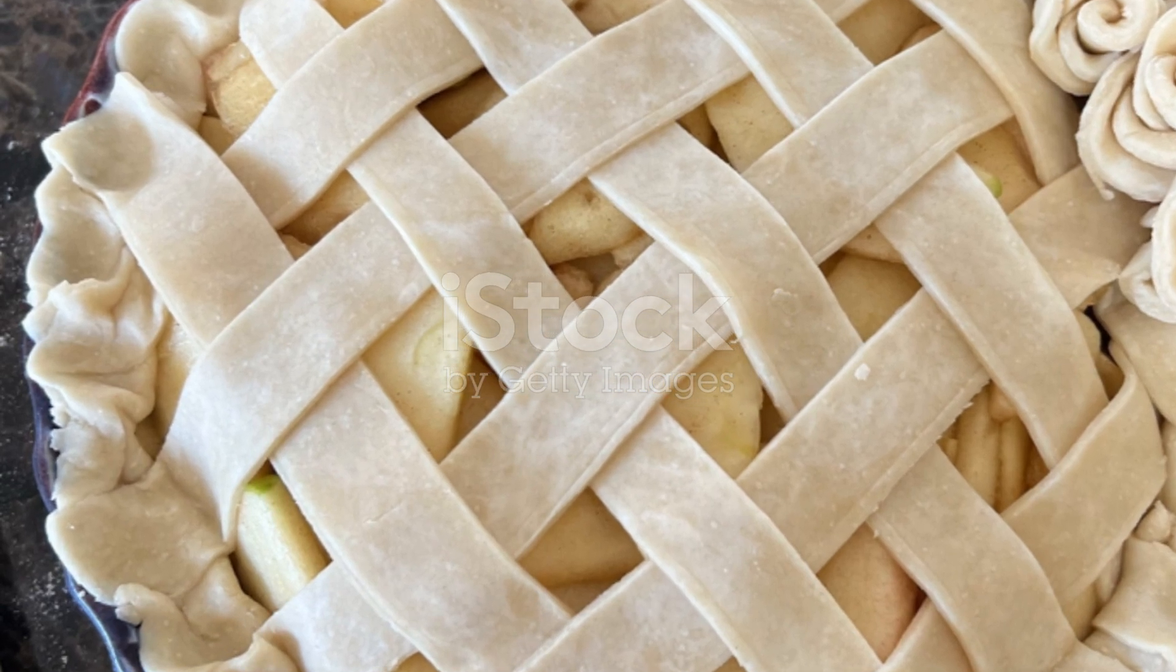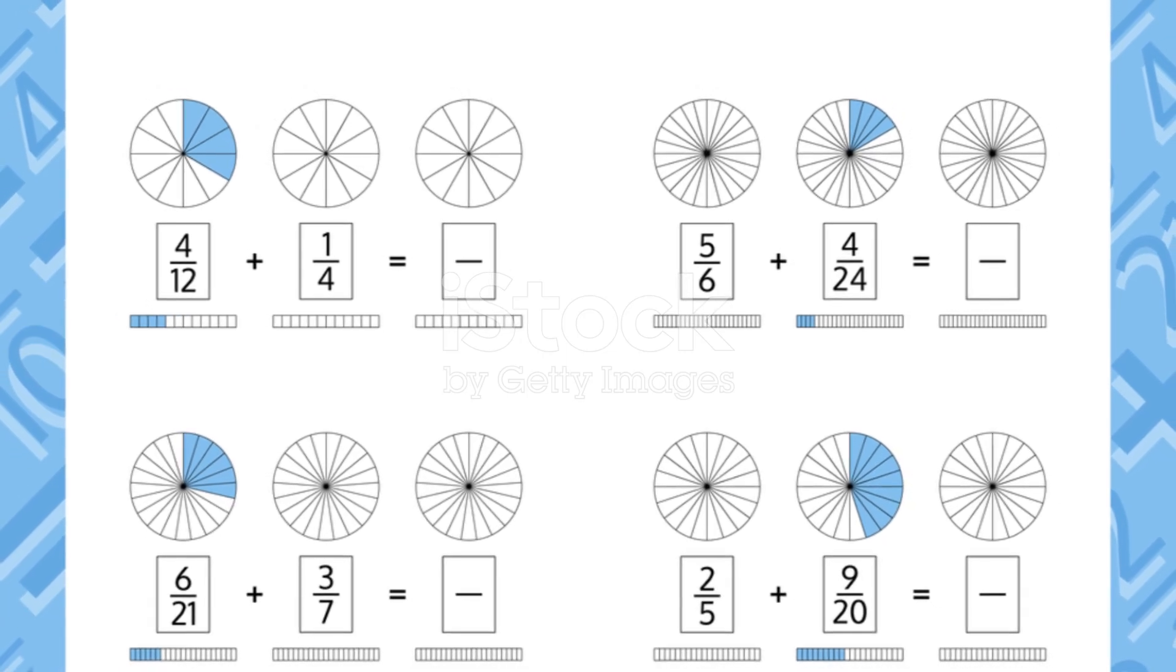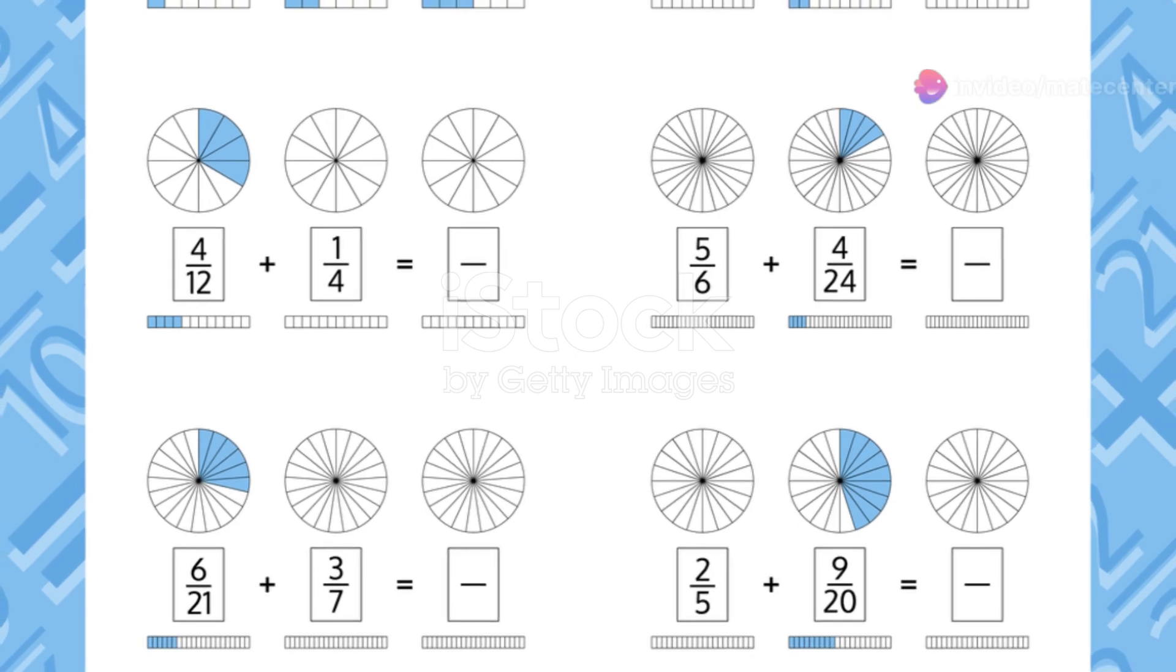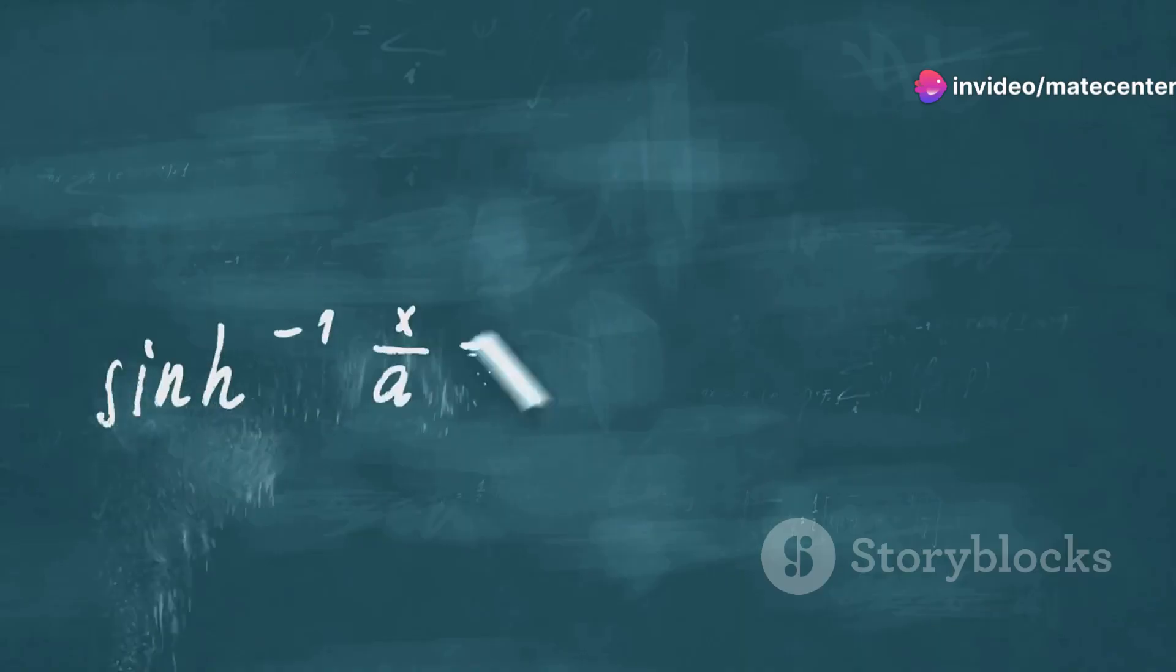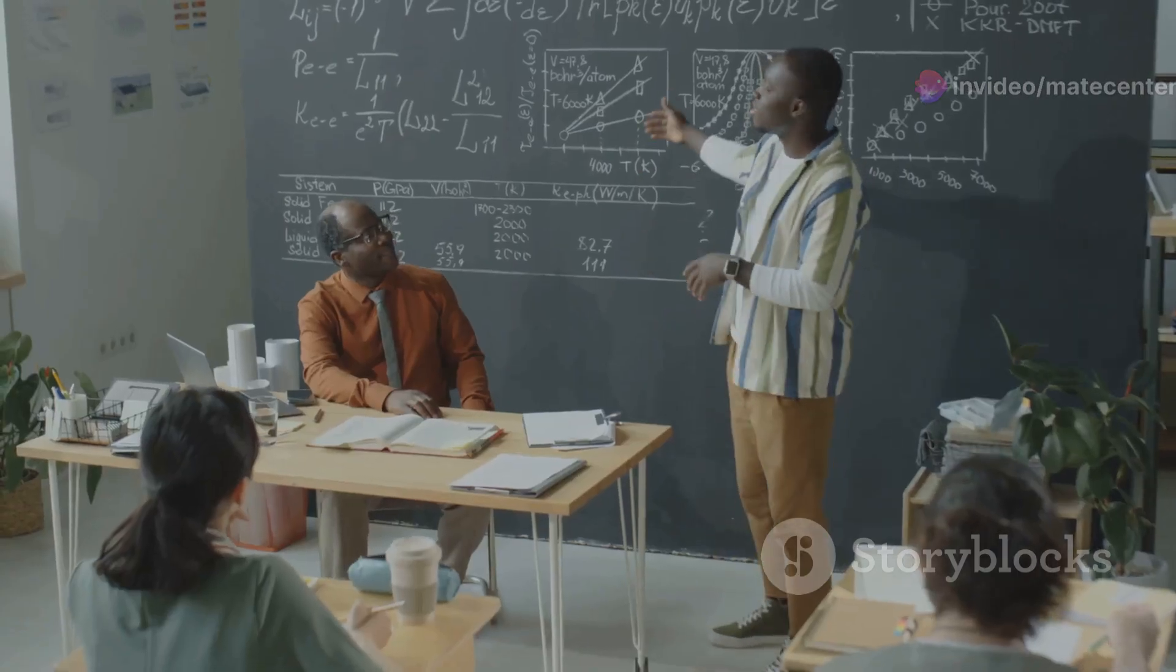In mathematical terms, you've taken two-eighths of the pie, which is a fraction. The number above the line, called the numerator, represents the parts you've taken. The number below the line, known as the denominator, indicates the total number of equal parts.